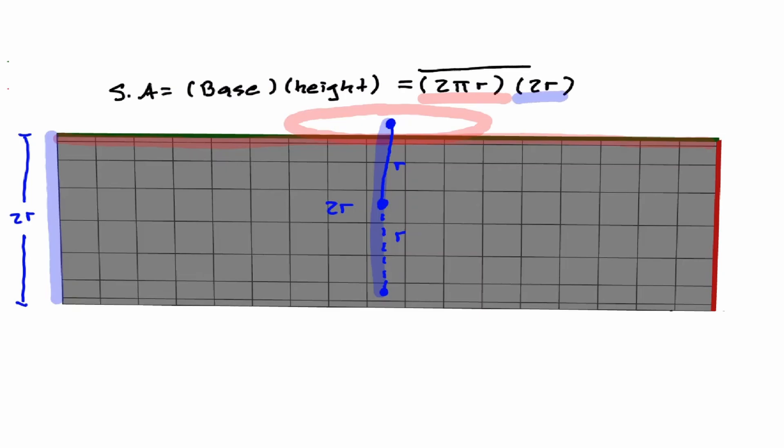And now when we multiply these two expressions to find the area of this rectangle, notice that we obtain 4πr². And this is how we define the surface area of the sphere, 4π times the radius squared of our sphere.